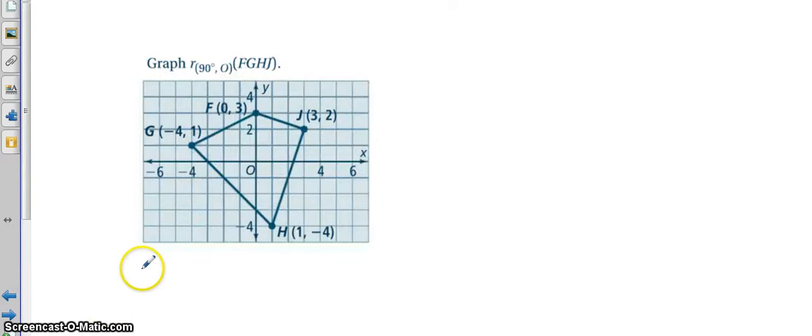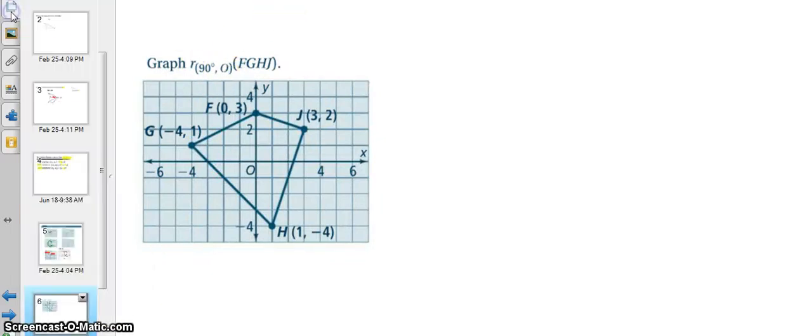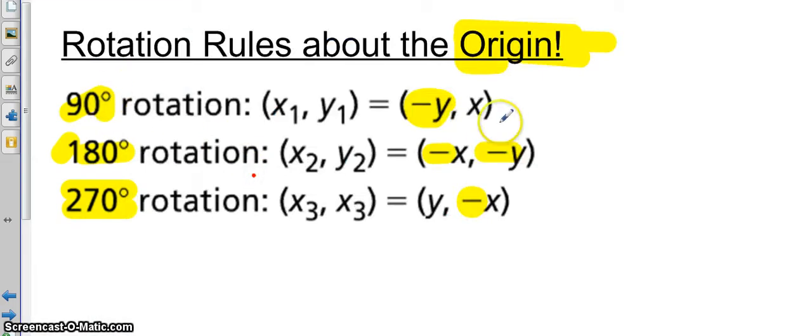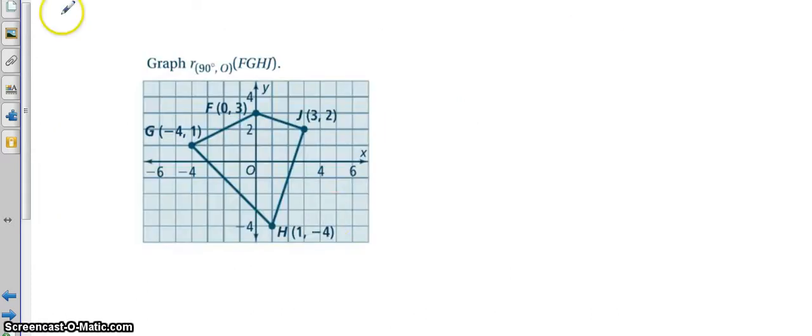Now we're going to rotate F, G, H, J about the origin, 90 degrees. If we check our rotation rules, a 90 degree rotation is going to flip my points, but now it makes what was your Y, what is now your X, the opposite of what it was. So try that with each of these. Think about what will the prime point be, then graph it.